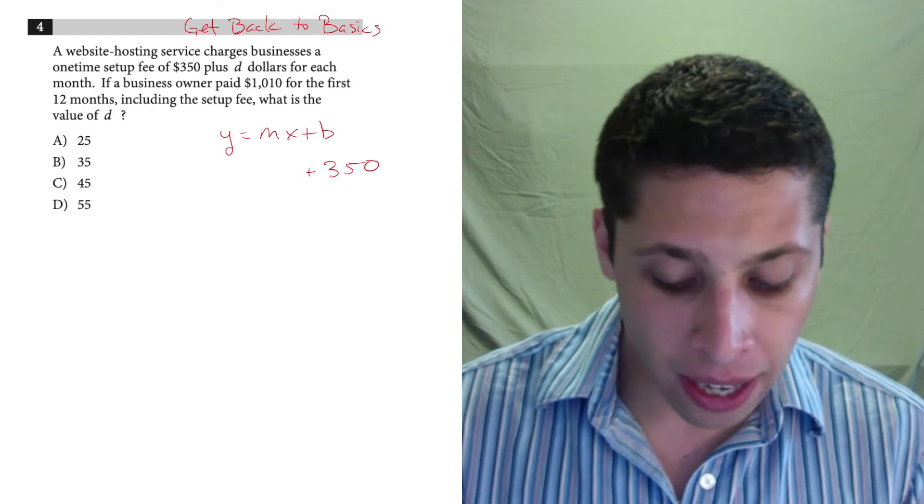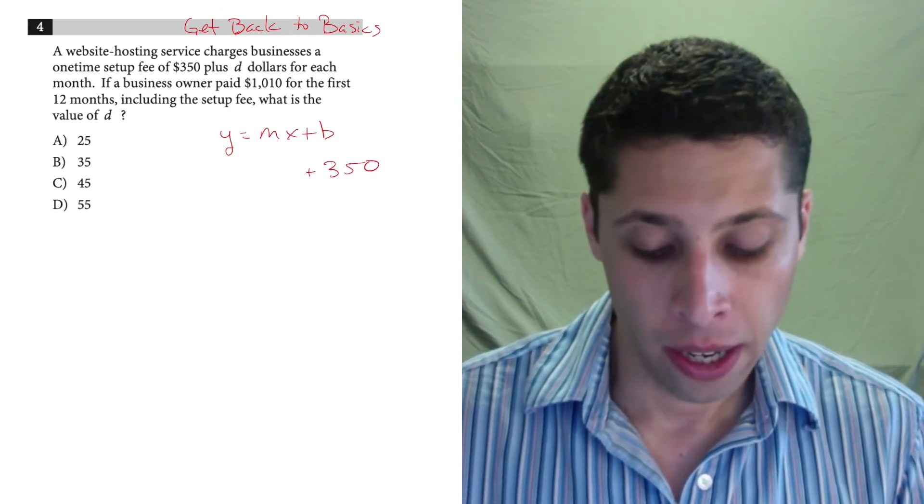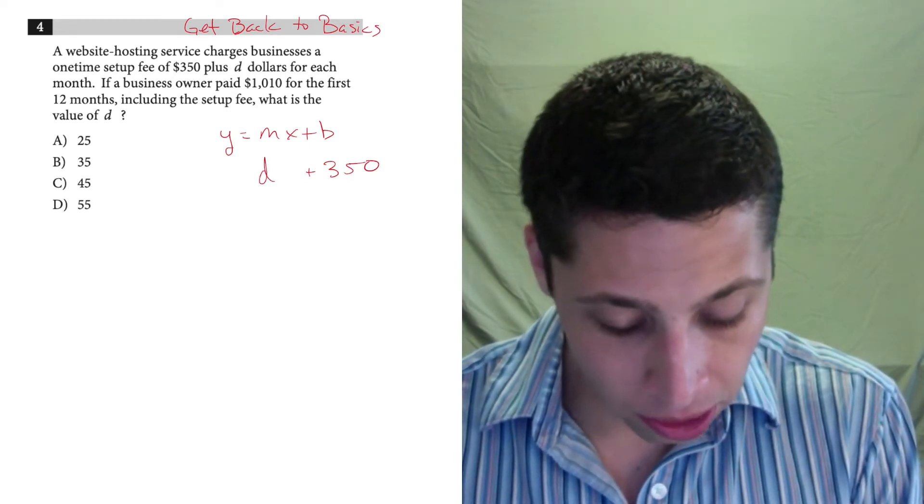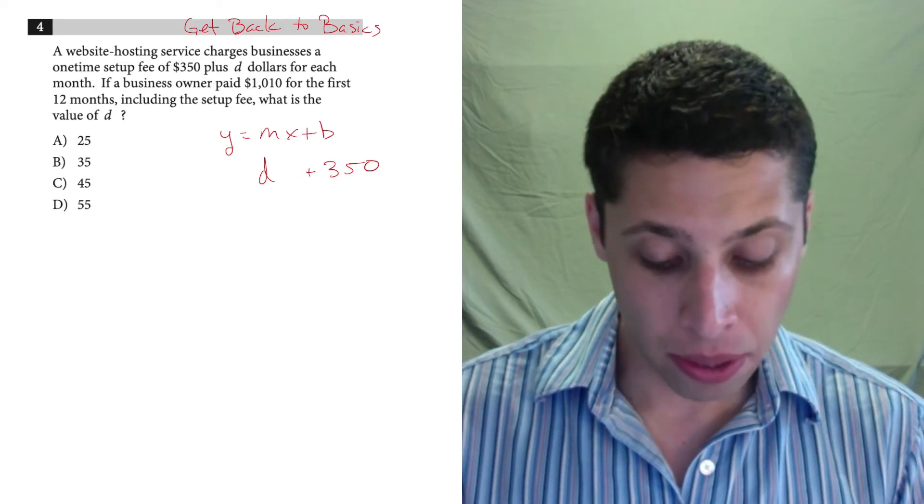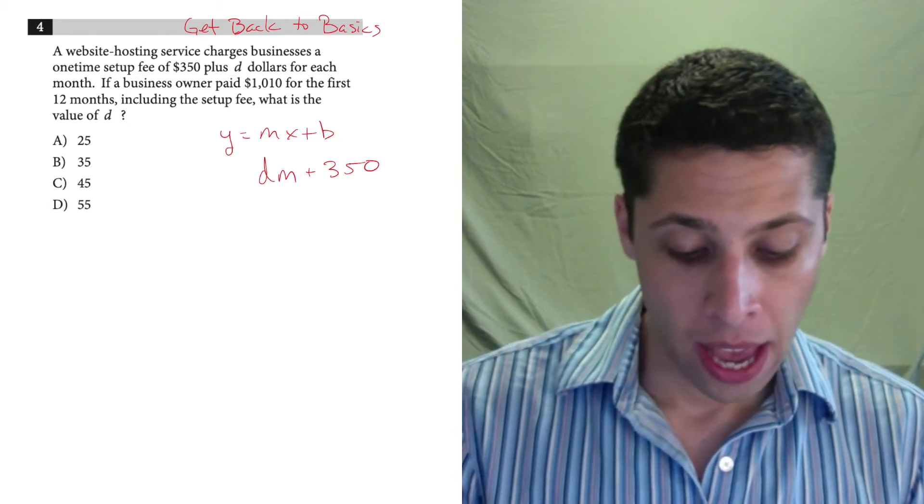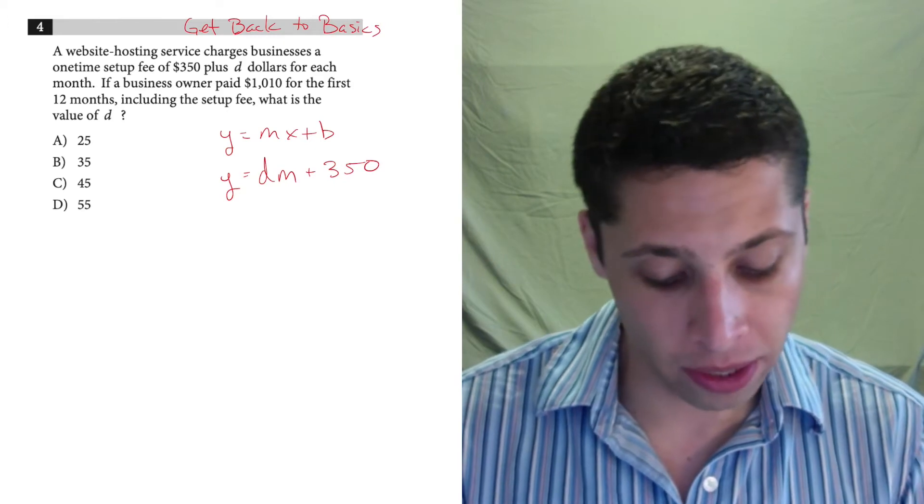Then it's D dollars for each month, and this is where things get a little confusing. D dollars is the rate, so that's kind of like the slope, but we don't know it. We're going to be asked to find it. But the X is the number of months, M, and we could just leave it as Y or the cost.